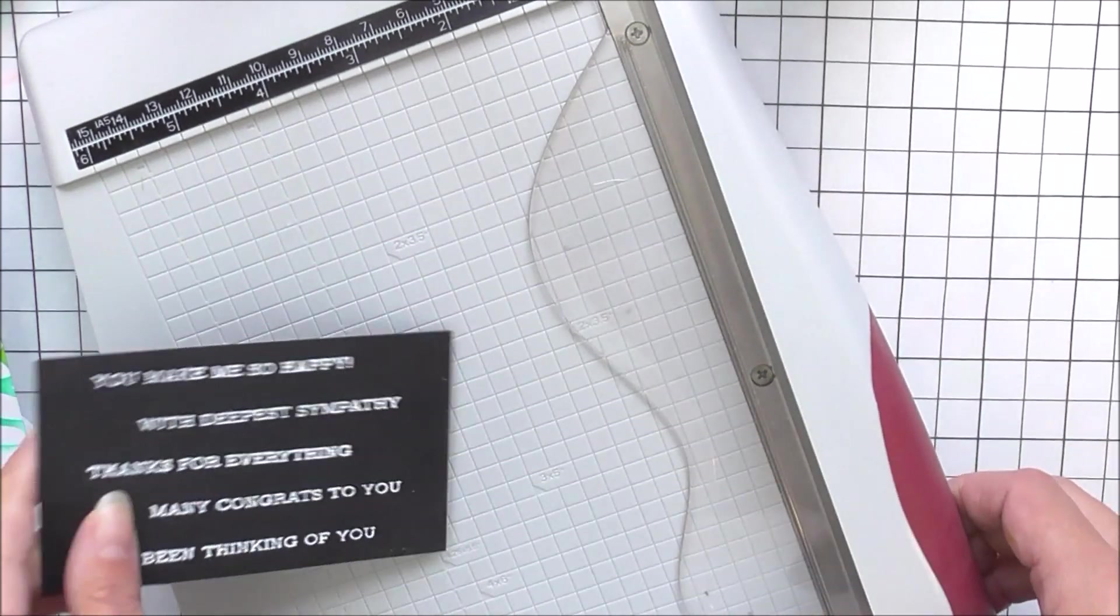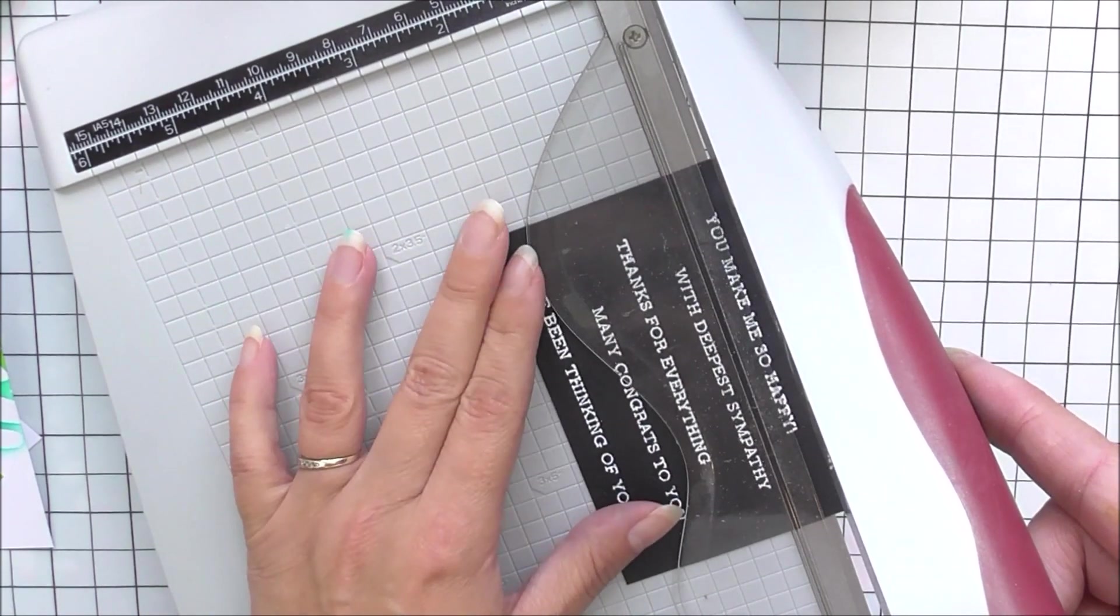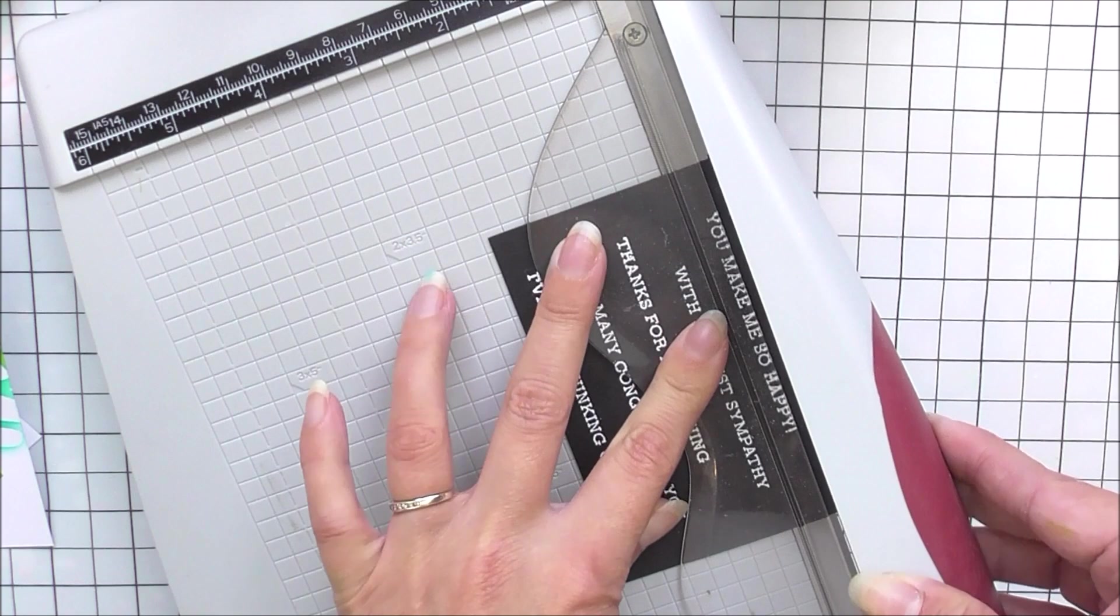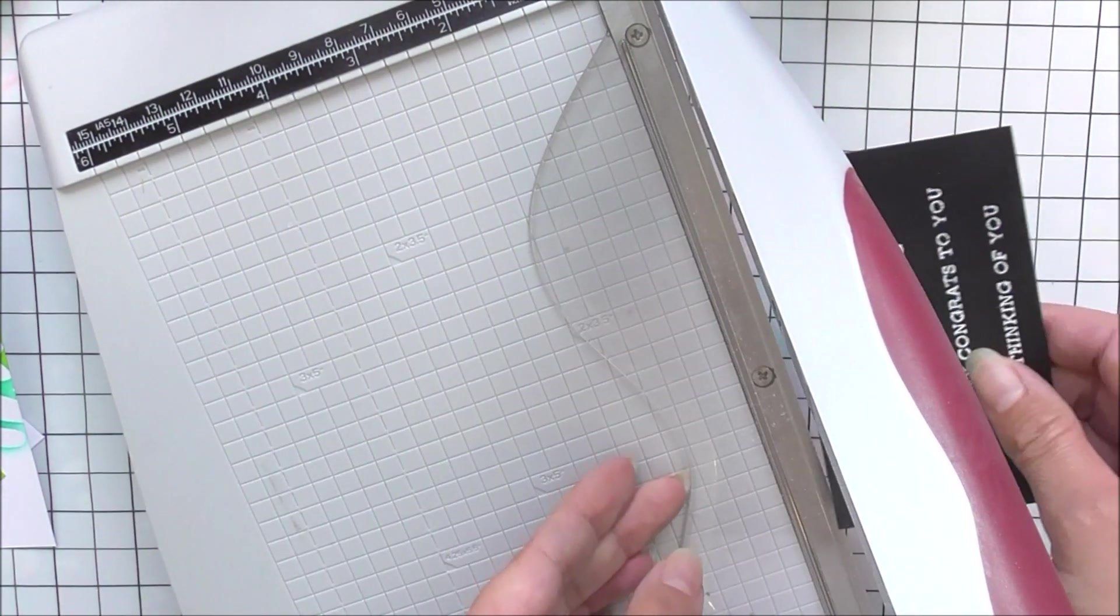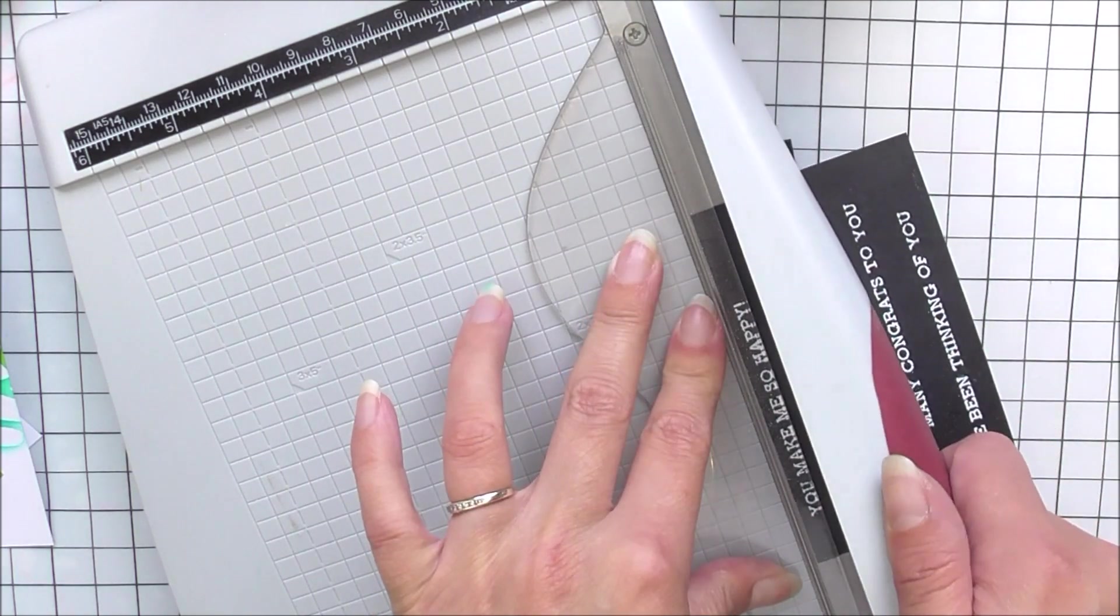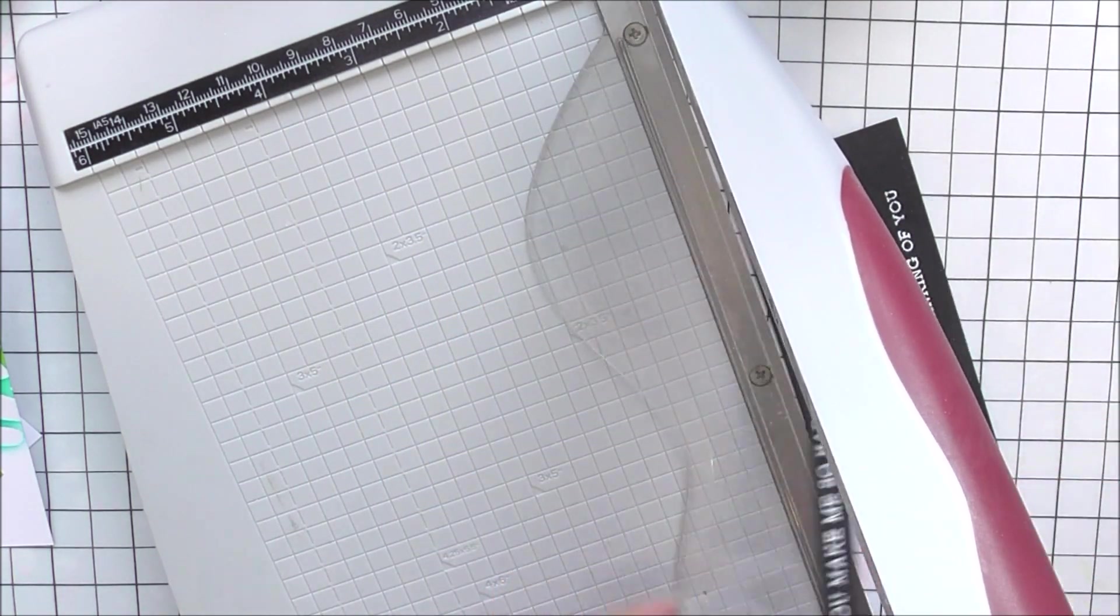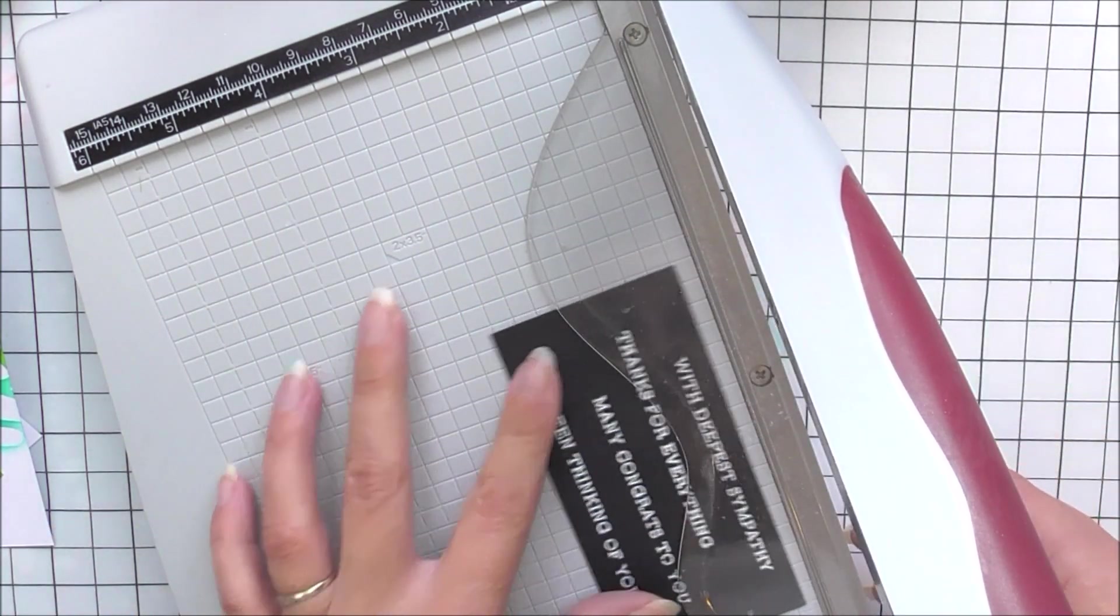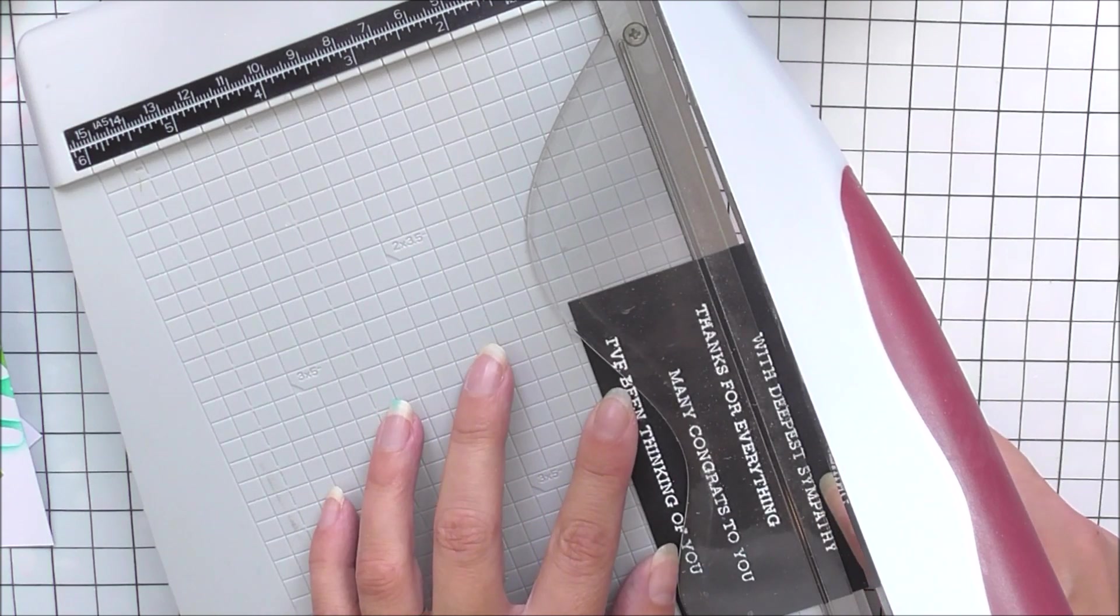I'm then going to take some sentiments. These are stamped with the Sentiment Strips stamp set. I've stamped them onto some jet black cardstock and used some pure white embossing powder to heat emboss them. I do stamp them a number at a time so I can then just strip and cut them into strips when I need them.